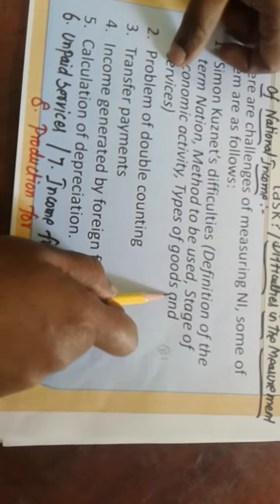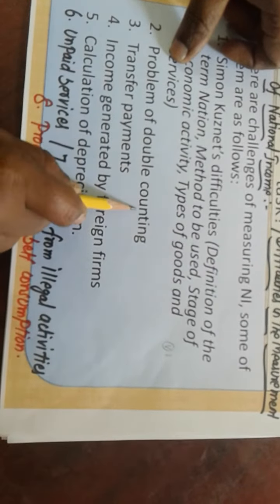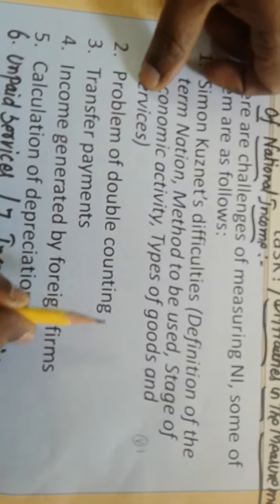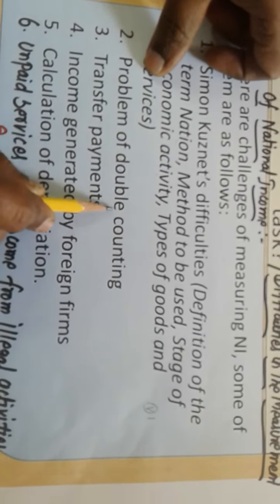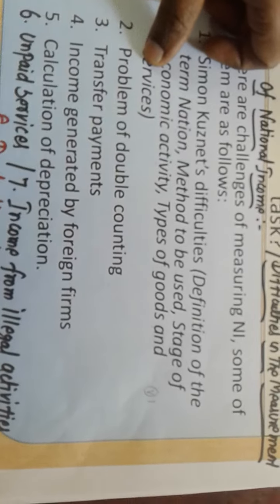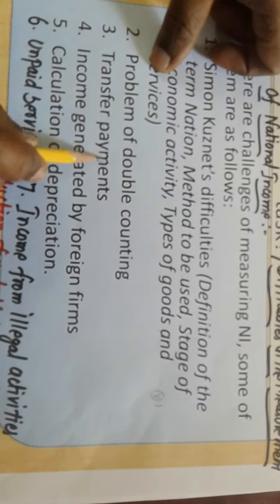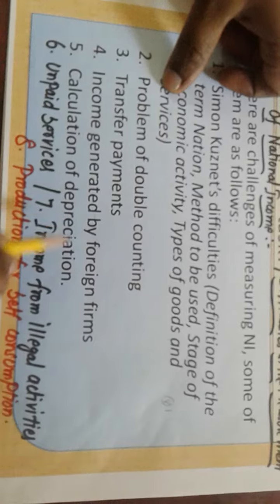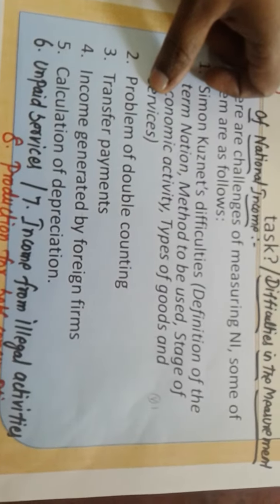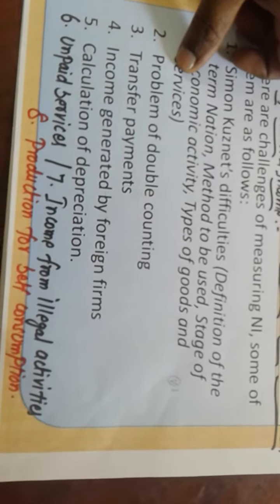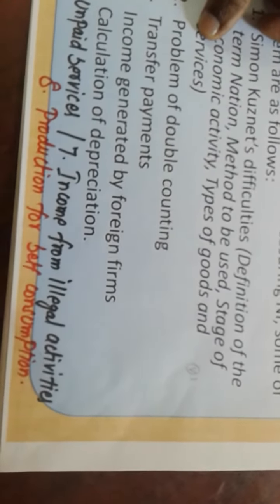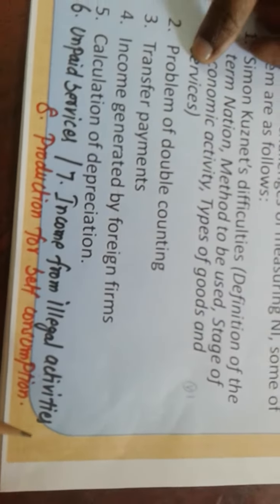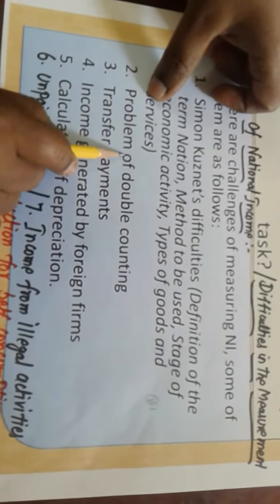The second problem is the problem of double counting — a very special concept and a very often repeated exam question. Other difficulties include: transfer payments, income generated by foreign firms, calculation of depreciation, unpaid services, income from illegal activities, and production for self-consumption.